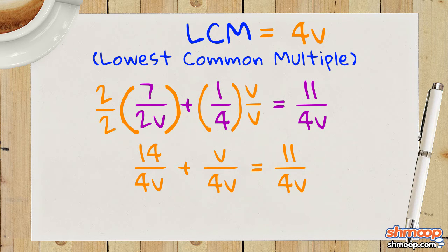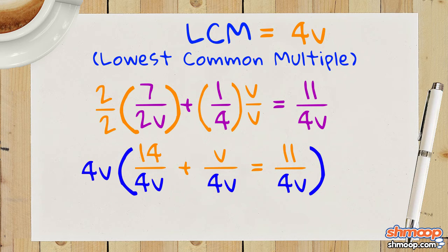11 over 4V is fine. Since every term in the equation is over 4V, we can just multiply the entire equation by 4V to get rid of it.